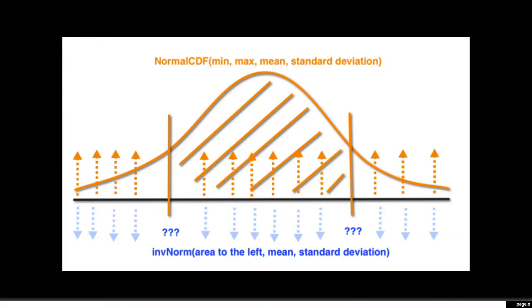Normal CDF for stuff up top, inverse norm for stuff at bottom. Normal CDF takes in the minimum of the shaded region. If you happen to have shading between two values, it would be this value and this value. Also, as you'll notice on the sheets of paper that I gave, you'll have positive 1E99 here.